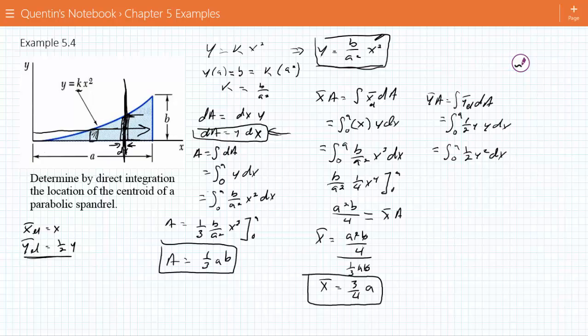You plug in y squared, and it ends up being the integral from 0 to A of 1 half b squared over A to the 4th x to the 4th dx. When you solve that, you end up getting this is equal to 1 tenth b squared A.